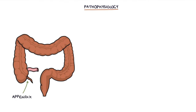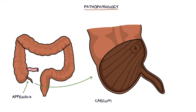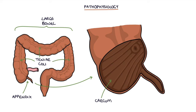Let's talk a bit about the pathophysiology. The appendix is a small tube that arises from the cecum, which is part of the large bowel. It is located at the point where the three tenia coli meet. The tenia coli are longitudinal muscles that run the length of the large intestine. There is a single opening to the appendix that connects it to the bowel, and this leads to a dead end in the appendix.